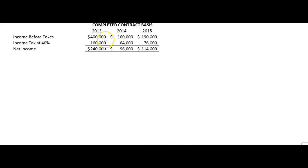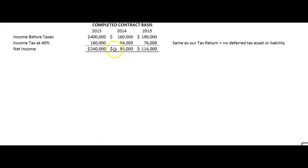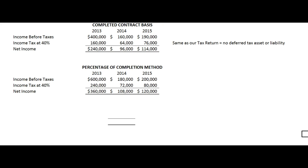So this company starts business on January 1st, 2013, and they're taxed at the 40% tax rate. This is what their income statement looked like, and it's also what their tax return looked like — they use the same numbers on their financials and their tax return, so there is no deferred tax asset or deferred tax liability. These guys decide at the beginning of 2015 that the percentage of completion method is better, and this is what their financials would have looked like had they done that.